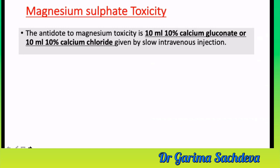In patients with eclampsia receiving magnesium sulfate, there can be magnesium sulfate toxicity. The antidote — an important recall question — is 10 ml of 10% calcium gluconate or 10 ml of 10% calcium chloride given by slow IV injection.